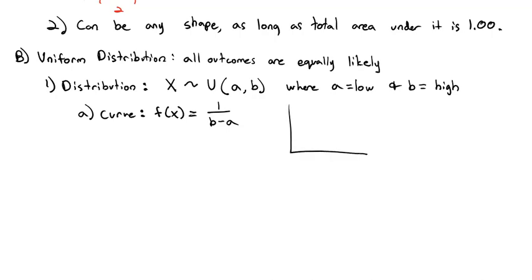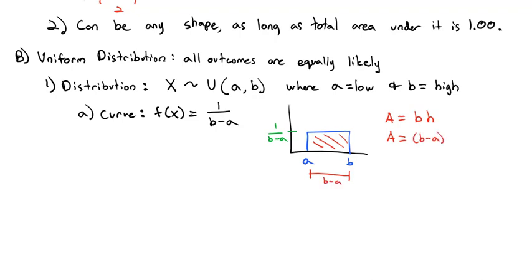The curve for the uniform distribution is f(x) equals the reciprocal of the difference, or 1 over (b minus a). What we end up with is a rectangle that goes from a to b, where all values are equally likely to occur. That height on the line is how likely it is to occur: 1 over (b minus a). If I find the area of this rectangle — area is base times height — the base is (b minus a) and the height is 1 over (b minus a). Those (b minus a)'s divide out, so the total area is 1.0.